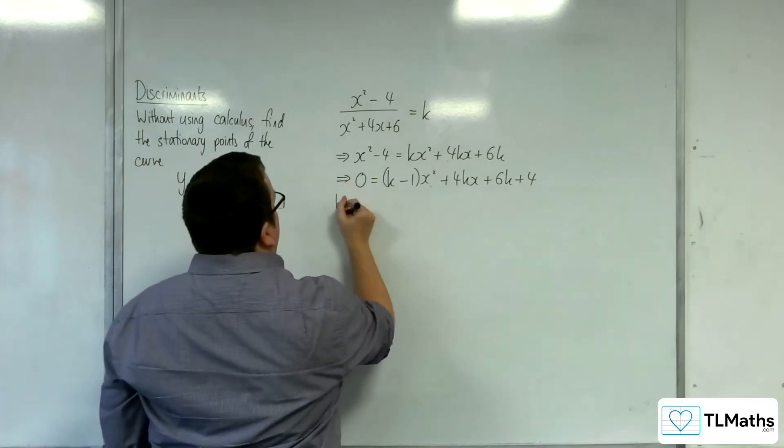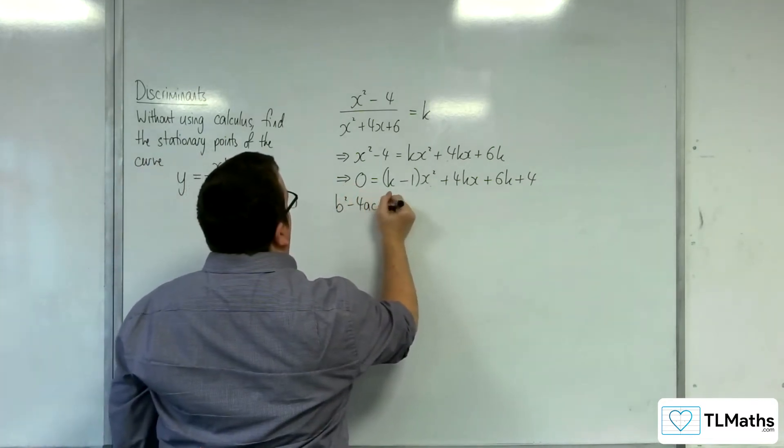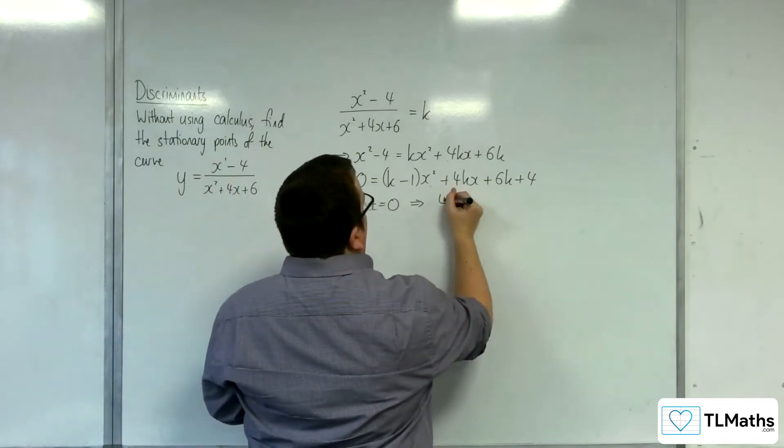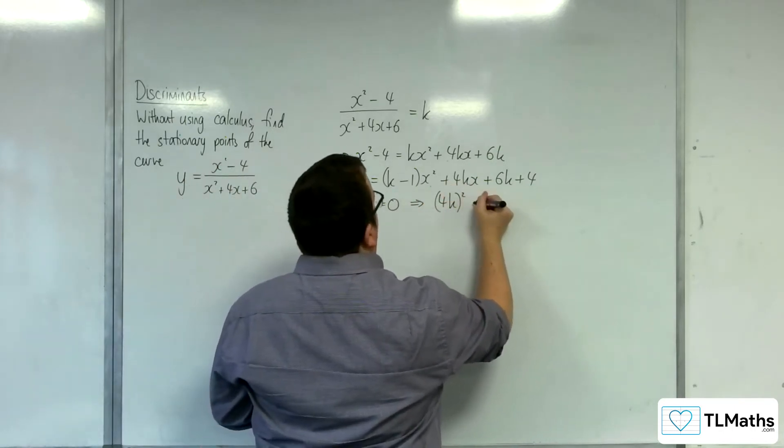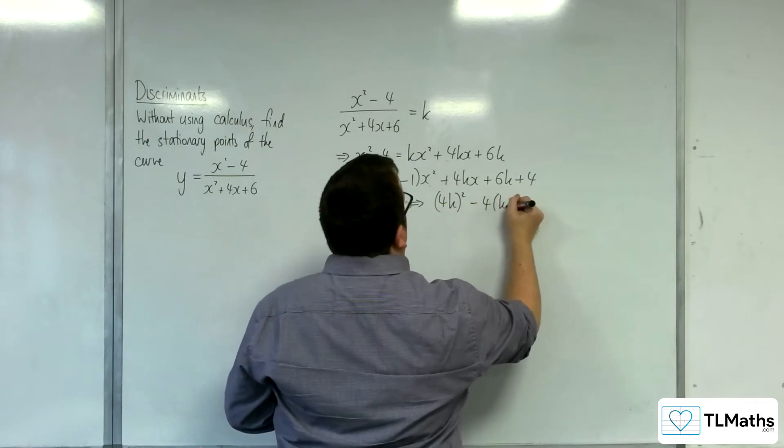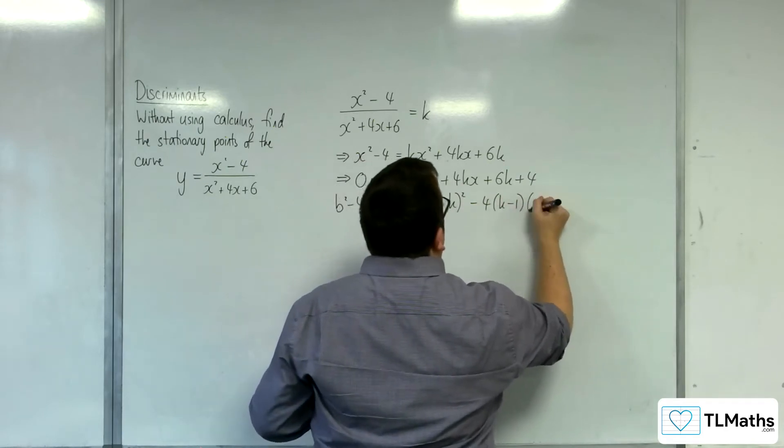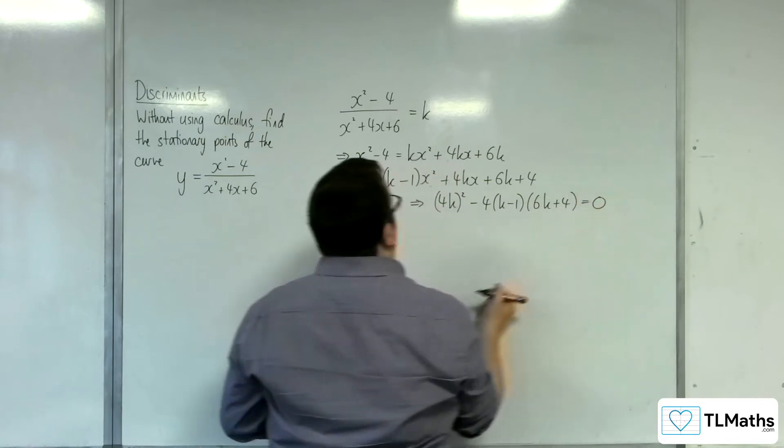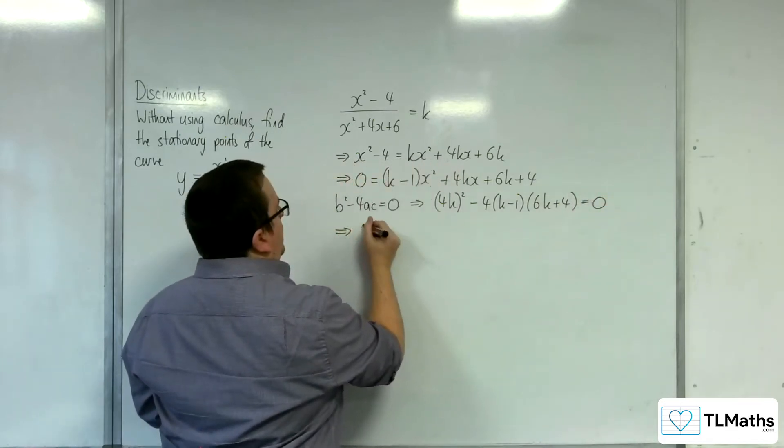So, we're going to need the discriminant to be equal to 0. So, 4k all squared take away 4 lots of k take away 1 times 6k plus 4 equals 0.